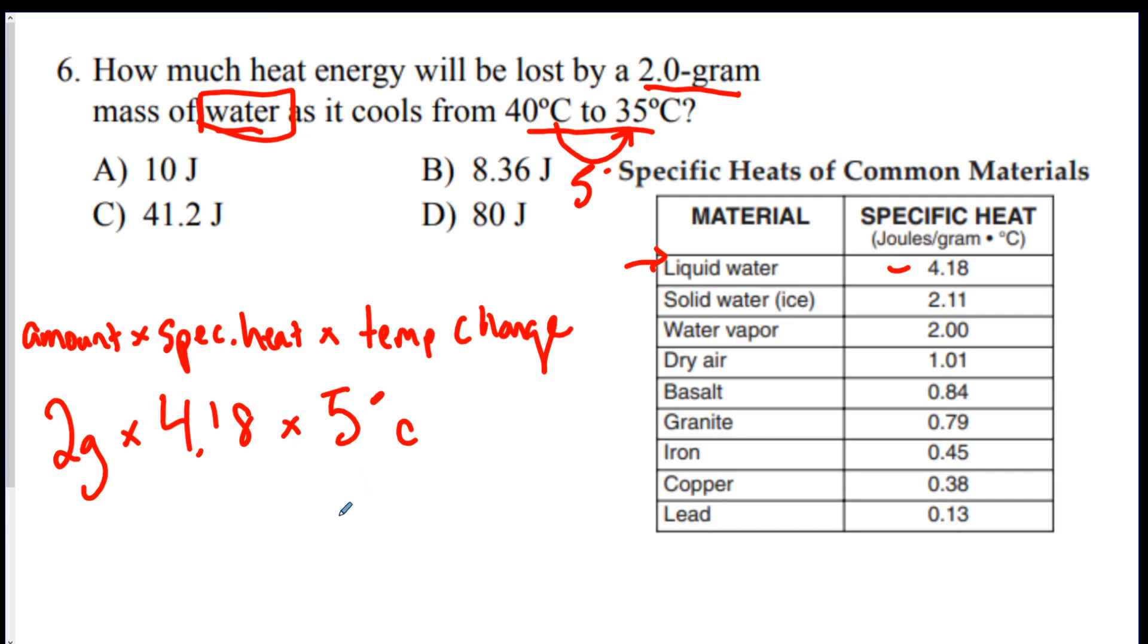So, now you do 2 times 5 times 4.18. And you put that in your calculator and you will get about 41.8. So, I'm going to pick the closest answer. The answer will be C. 41.2. Sometimes it will say approximately. But if not, you would just pick the closest answer.